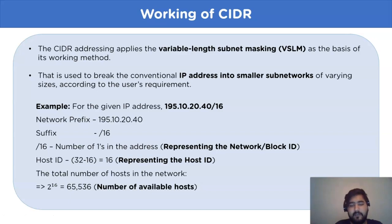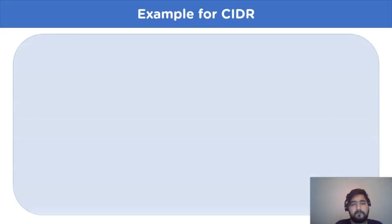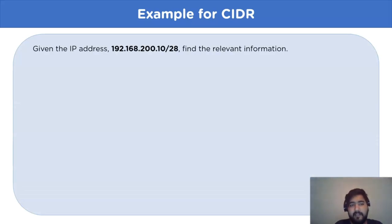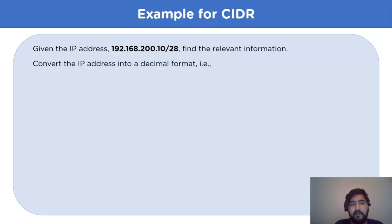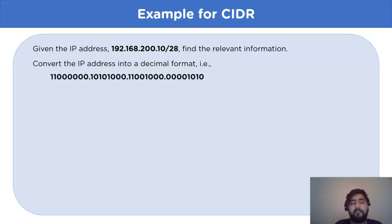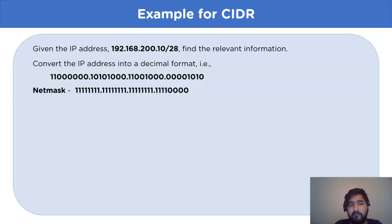Now let's move on to the examples to better understand the working. The first example uses the IP address 192.168.200.10/28, and we have to find the relevant information. For the first step, convert the IP address into binary format. Next, let's find the network mask: that would be 28 ones and four zeros. According to the slash number, we assign that many ones for the network mask — in this case, slash 28 means 28 ones from left to right.